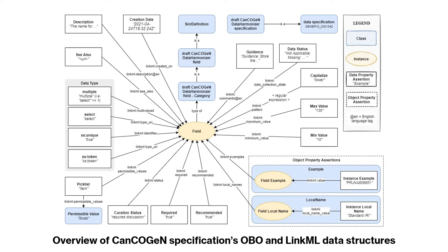We have data property assertions — to continue with this example — such as short read data capability, which connects instances with literal data values, while object property assertions connect instances to other instances, for example a specific serial number that belongs to the model you have in your lab. In these cases, we have class intermediaries.